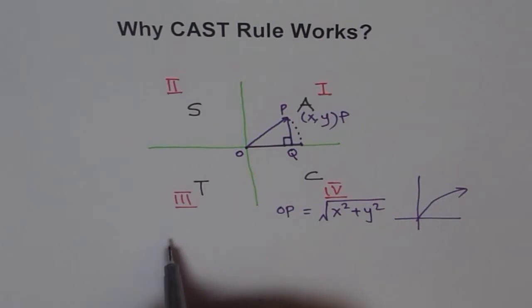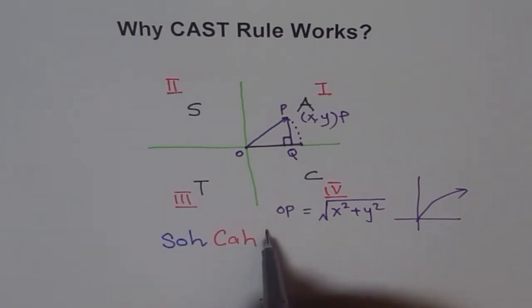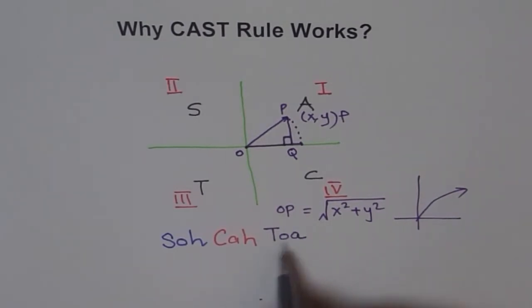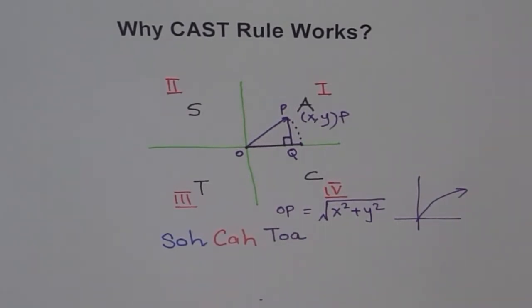Let me write these ratios also in our acronym, SOHCAHTOA, right? This is SOHCAHTOA. Sine is opposite over hypotenuse. And then we have cosine, SOHCAHTOA, adjacent over hypotenuse. And then we have our tangent function, where it is opposite over adjacent, SOHCAHTOA.